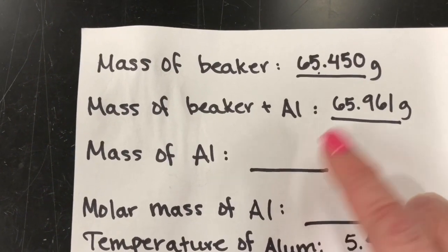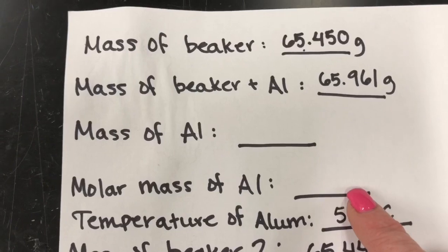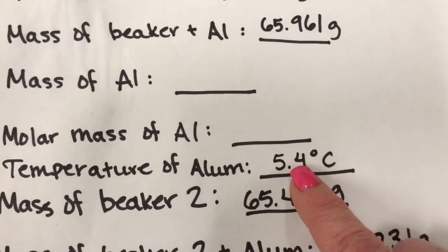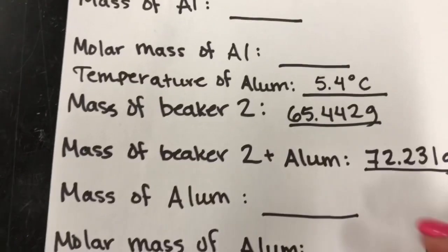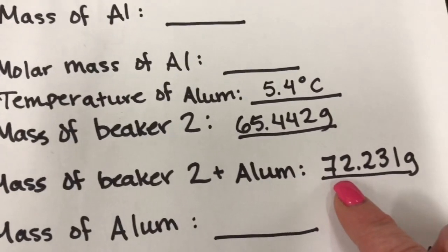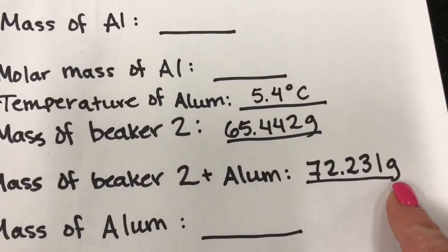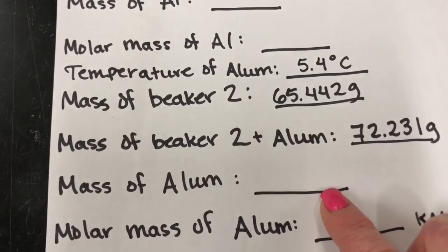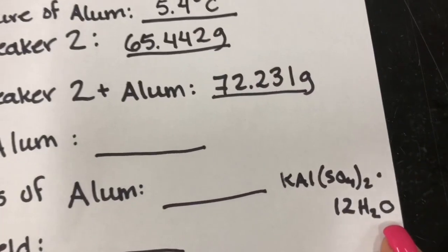You can find the mass of aluminum by using these two pieces of data. You can also use a periodic table to find the molar mass of aluminum — that may help you later. The temperature of the alum at the end was 5.4 degrees Celsius. The mass of my second beaker was 65.442 grams. The mass of my second beaker plus the alum was 72.231 grams. So you can figure out what my mass of alum was. You'll also need the molar mass of alum — you can figure that out using a periodic table.